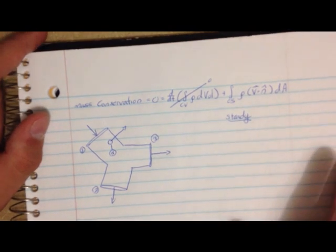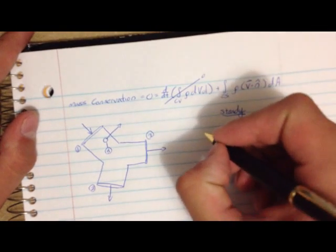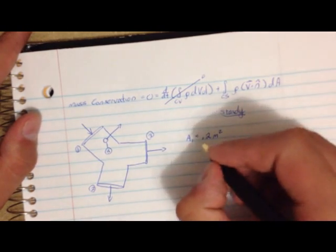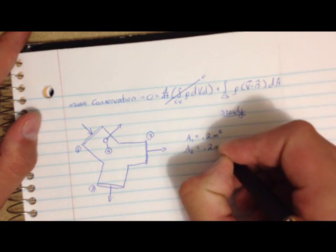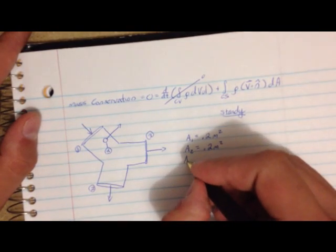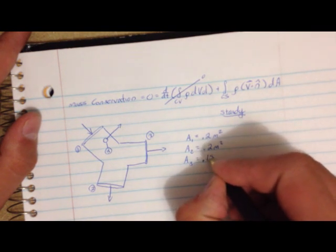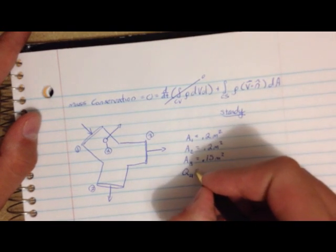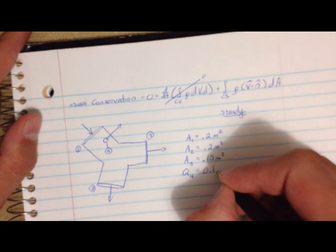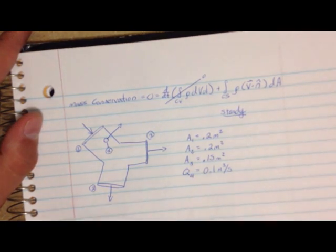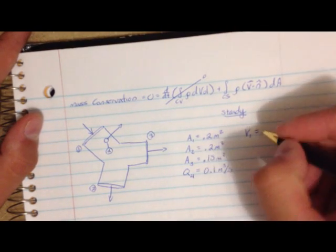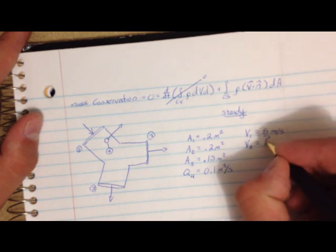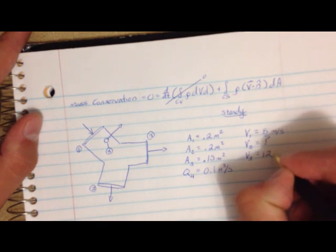The area for point 1 is equal to 0.2 meters squared, the area for point 2 is 0.2 meters squared, and the area for point 3 is 0.15 meters squared. The volumetric flow rate out of point 4 is equal to 0.1 meters cubed per second. The velocity at point 1 is 5 meters per second, the velocity at point 3 is 12 meters per second, and we're going to find the velocity at point 2.